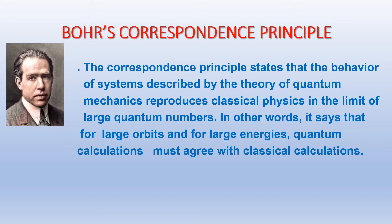There must be some explanation where the same phenomena can be explained based on both types of theories — quantum mechanics and classical mechanics. So Niels Bohr in 1920 predicted a principle known as Bohr's correspondence principle. According to it, the behavior of systems described by quantum mechanics reproduces classical physics in the limit of large quantum numbers, or for large orbits and large energies, quantum calculations must agree with classical calculations. Classical calculations can be considered a special or limiting case of quantum calculations.